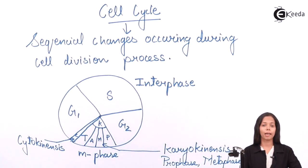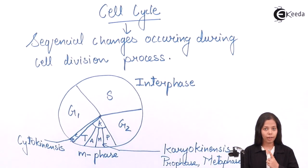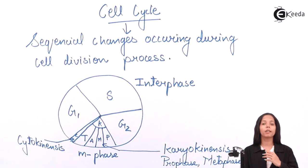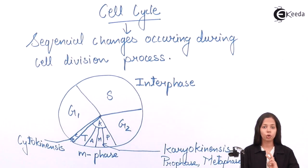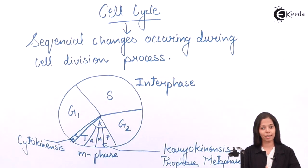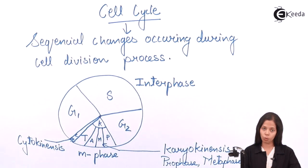Cell cycle is carried out in two major phases: interphase and M phase. Interphase consists of three sub-phases: G1, S, and G2. M phase consists of two major phases: karyokinesis and cytokinesis. Karyokinesis means division of the nucleus. Cytokinesis means division of the cytoplasm.